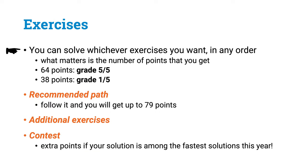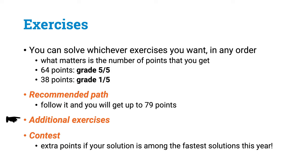You can freely solve any subset of our exercises in any order. Just pay attention to the task-specific deadlines if you want to get full points for them. The only thing that matters for course grading is the total number of points you get. Accumulate a total of 64 points one way or the other, and you'll get the highest grade. If you don't have any strong preferences, you can simply follow the recommended path, and there will be something interesting to do every week. You can also look at the additional exercises for extra points, and we have also got a contest in which the fastest solutions will get extra points. There will be a scoreboard available — more about it later.